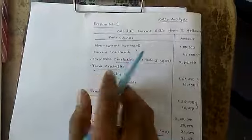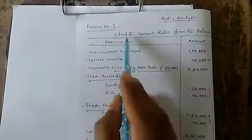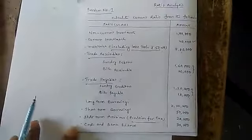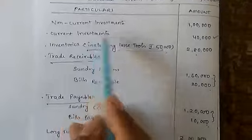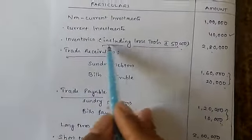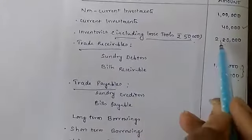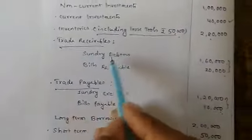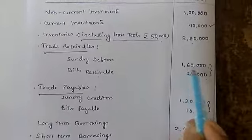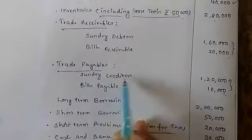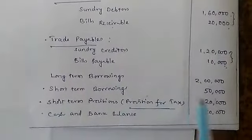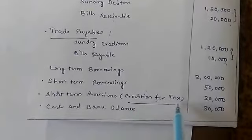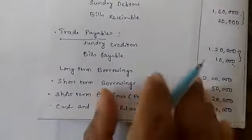We are doing problems based on the current ratio. The problem is: calculate the current ratio from the following information. Non-current investments are ₹1 lakh; current investments are ₹40,000; inventories (including loose tools ₹50,000) total ₹2,80,000; trade receivables — sundry debtors ₹1,60,000 and bills receivable ₹20,000; trade payables — sundry creditors ₹1,20,000 and bills payable ₹10,000; long-term borrowings ₹2,00,000; short-term borrowings ₹50,000; short-term provisions (provision for tax) ₹20,000; and cash and bank balance ₹30,000.